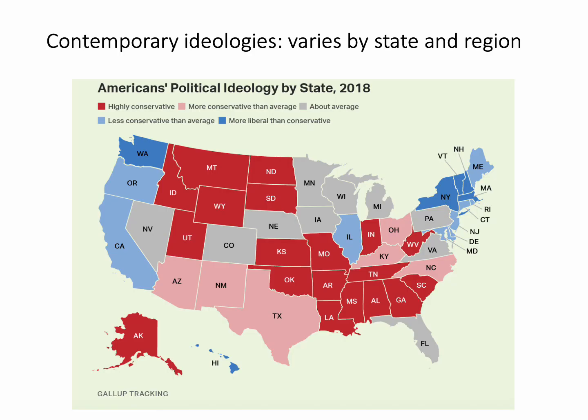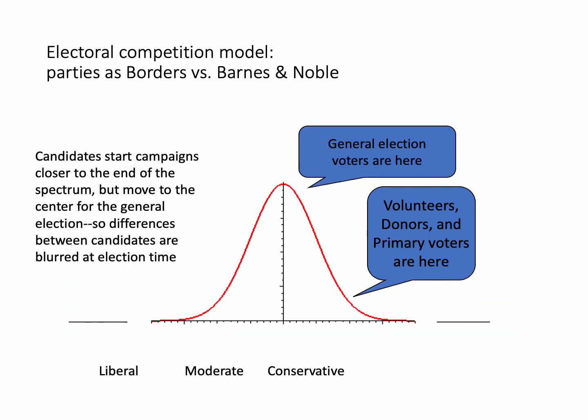The country varies considerably in political ideology depending on where you live. Look at the Northeast and West versus the South and mountain states — you can see the difference clearly. Red means highly conservative, pink means conservative, dark blue means more liberal, light blue means liberal. Illinois tends to be one of the liberal states. These ideological differences correlate with how people vote and where senators come from.